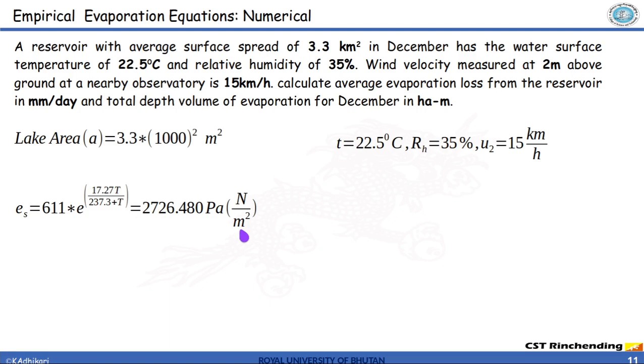But we don't want newton per meter square, we want it in millimeter of mercury. To do that, we simply have to use the expression that pressure is equal to rho G H whereas pressure is already calculated. Rho is the density of mercury, G is the acceleration due to gravity and H is the height that the mercury is going to raise when this much pressure is applied.